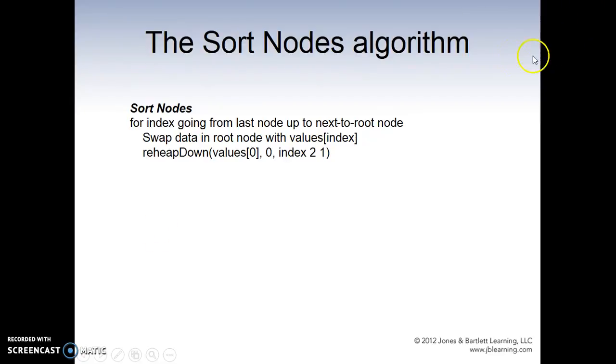So the sort algorithm: for index going from last node up to next to root node, swap data in root node with values at index. This is going to reheap down, passing the values index 0 and index.